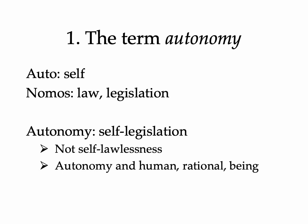The term autonomy comes from two ancient Greek root words. One is 'auto,' which refers to self, and 'nomos,' which refers to law — so autonomy is self-legislation. It refers to a kind of control over oneself, giving law to one's own action. It refers to the human being as being rational in making these choices — not lawlessness.